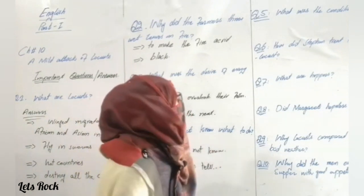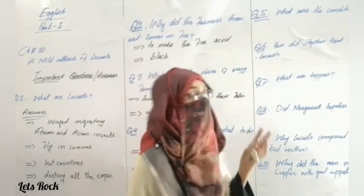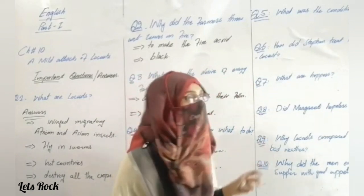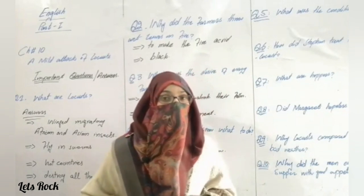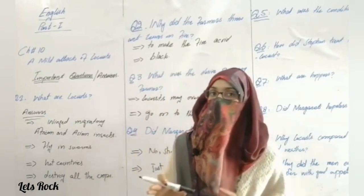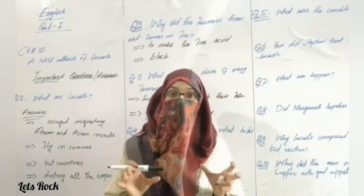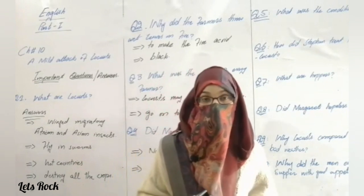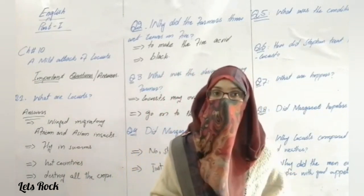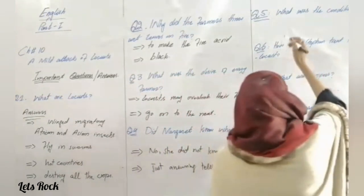Question number five: What was the condition of trees? Dear students, the condition of trees because of locusts was very bad. They were completely still with not a single leaf on them, and many trees had broken branches.